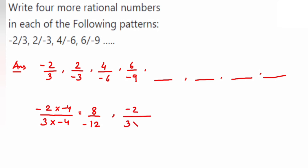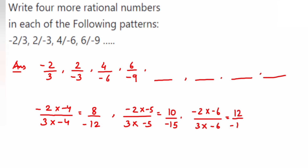The next one: multiply -2/3 by -5, so we get 10/(-15). Then multiply by -6 — so -2 × -6 = 12 and 3 × -6 = -18, giving us 12/(-18).